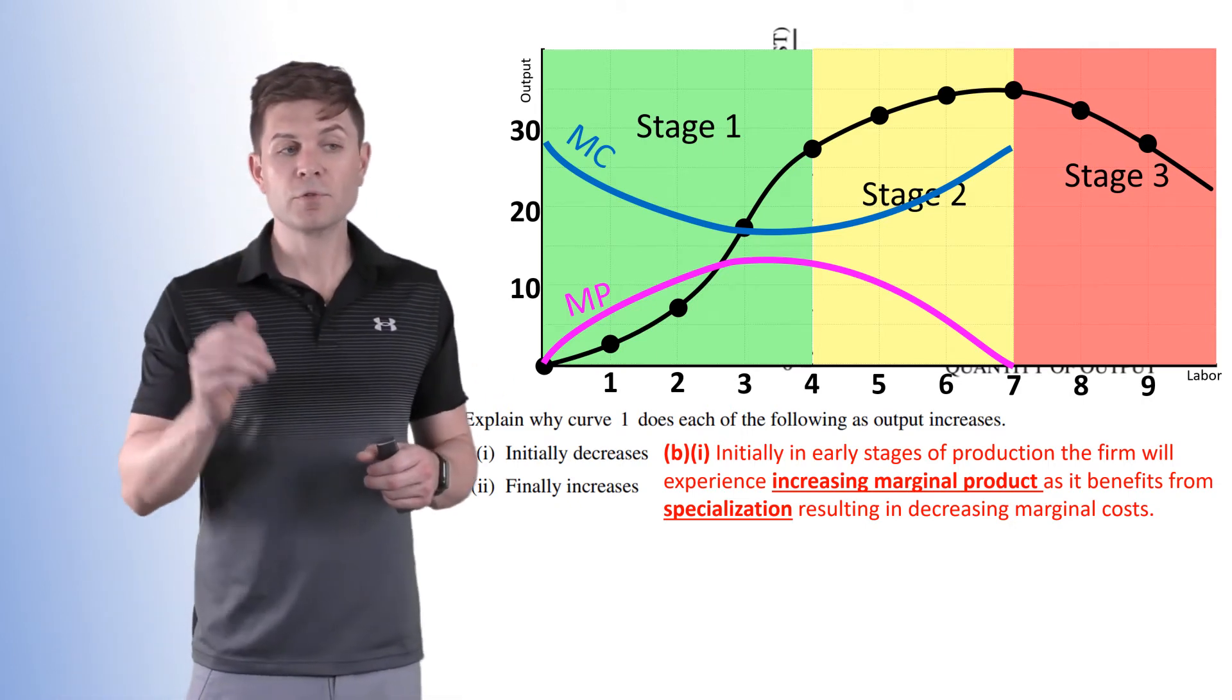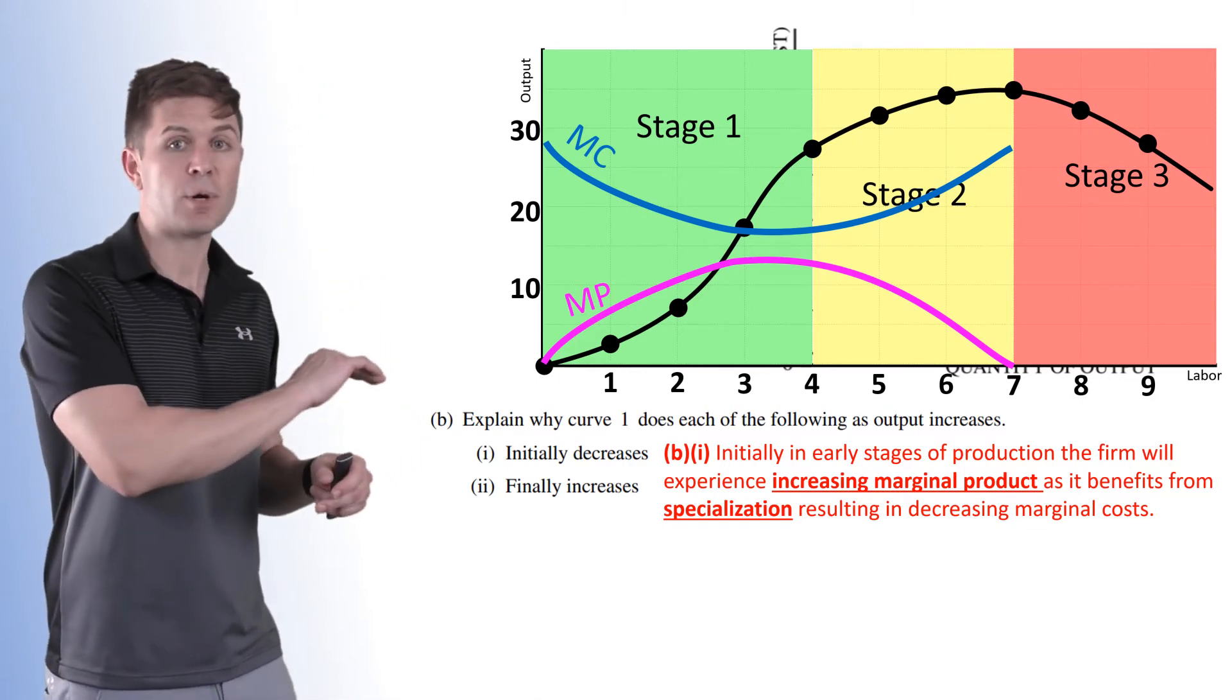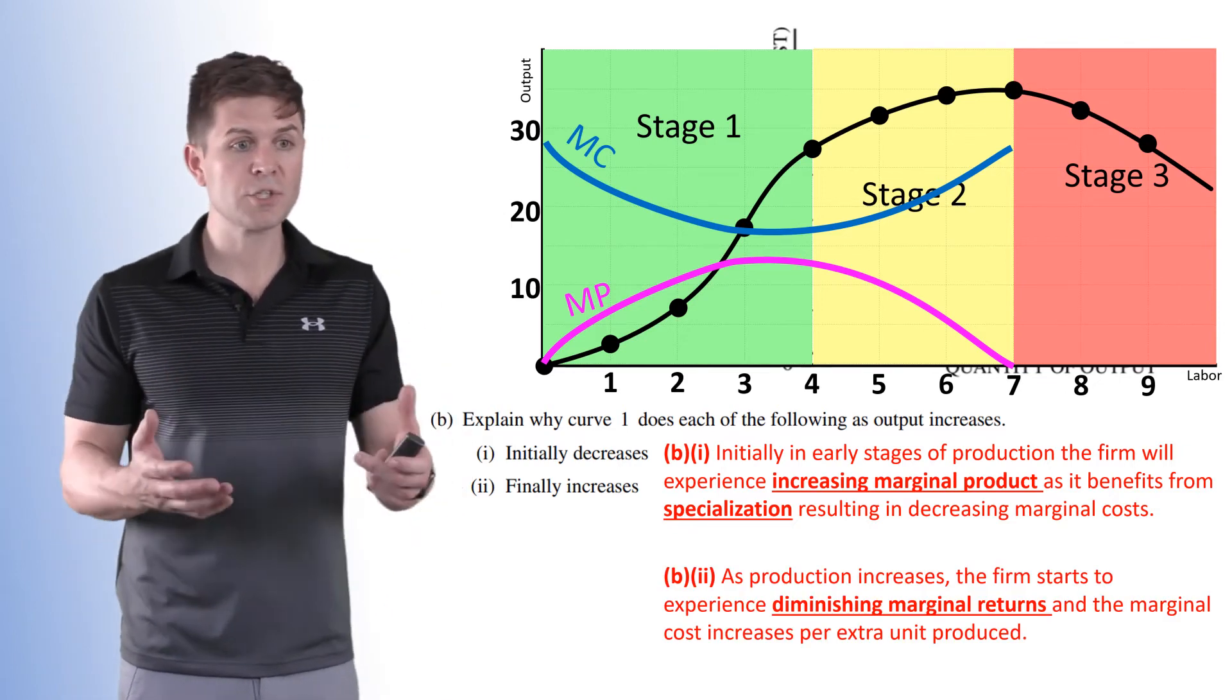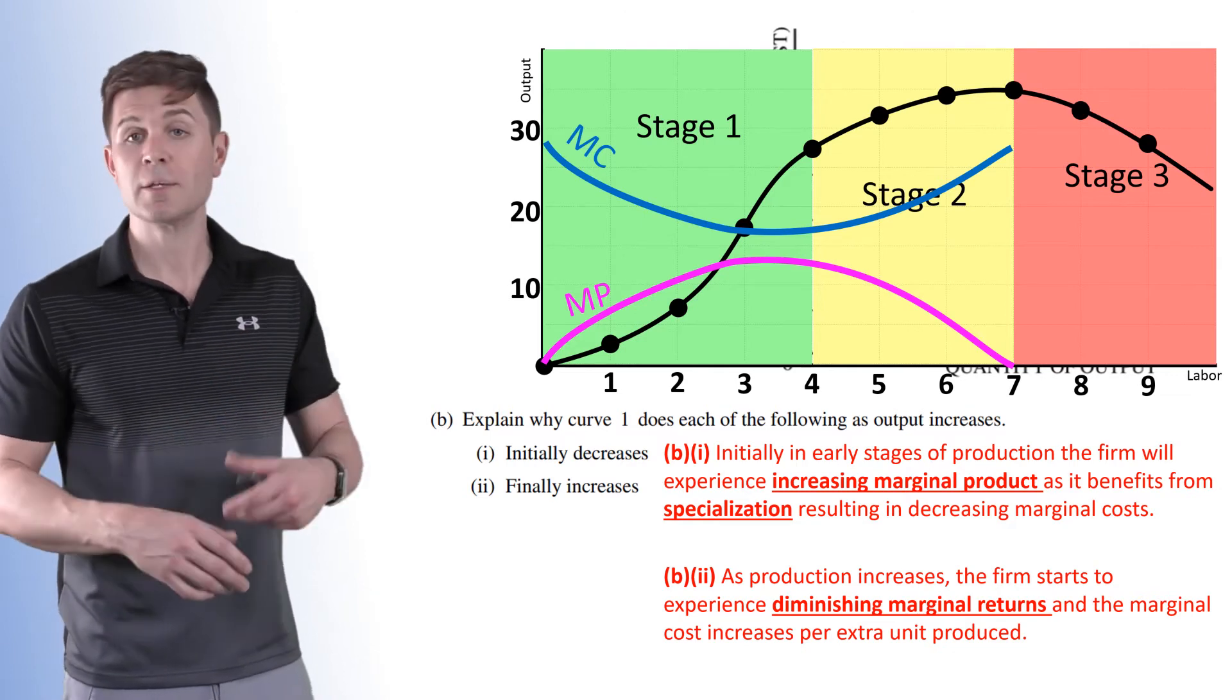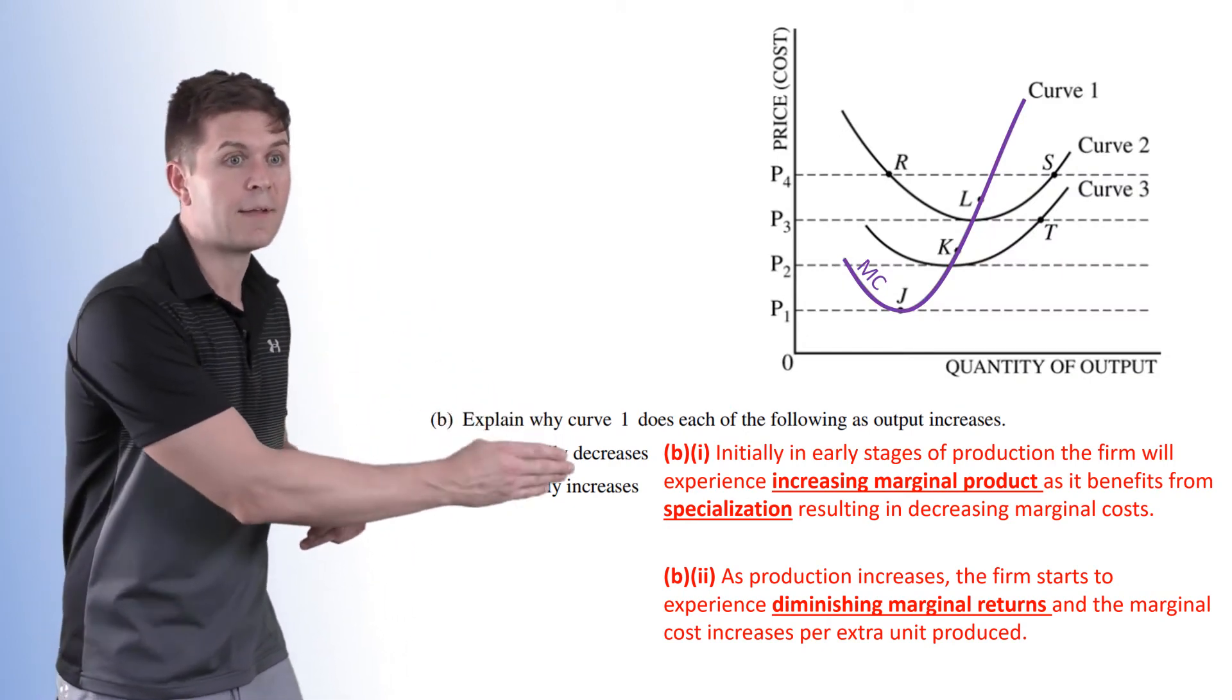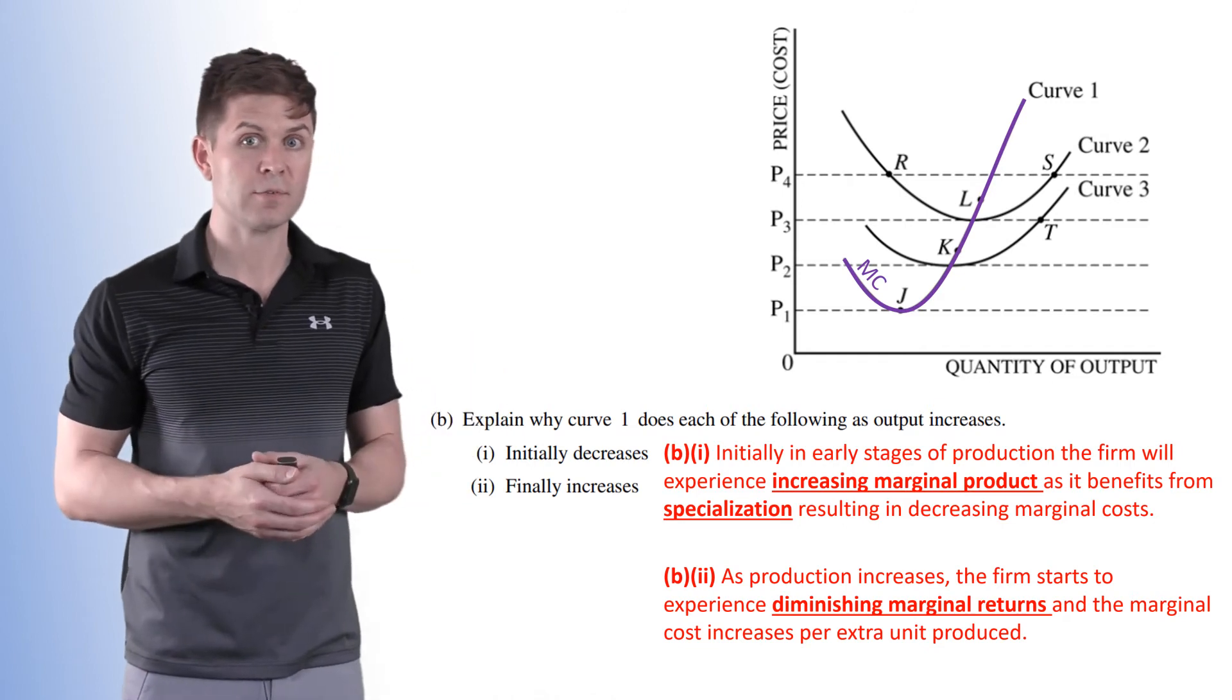Part two asks us why it finally increases. So eventually after marginal product increases, we get that increasing marginal product, we go on to the diminishing marginal product. So as production increases, the firm starts to experience diminishing marginal returns. And the marginal cost increases per extra unit produced. So we get that dip down in the beginning, and then that increasing marginal cost afterward as diminishing marginal product starts to set in.